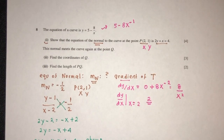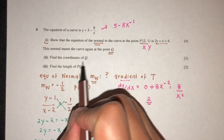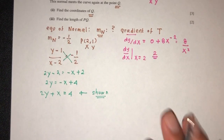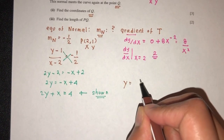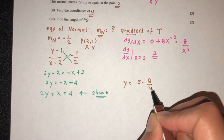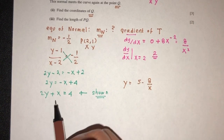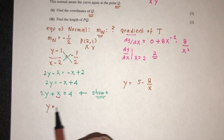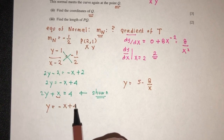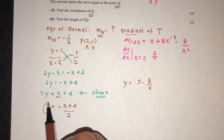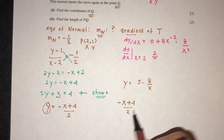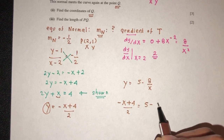Now this normal meets the curve again at point Q — find the value of point Q. So meet, cut, intersect means we have to solve a simultaneous equation. The curve is given by this equation. Let's make y the subject: y will be (minus x plus 4) divided by 2. Replacing into the curve you will have (minus x plus 4) over 2 equals 5 minus 8 over x.